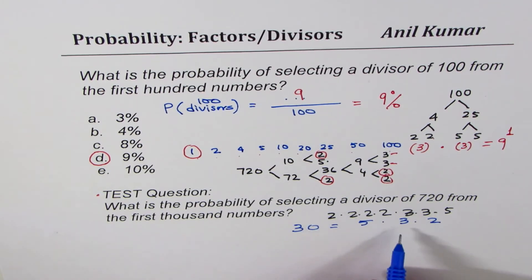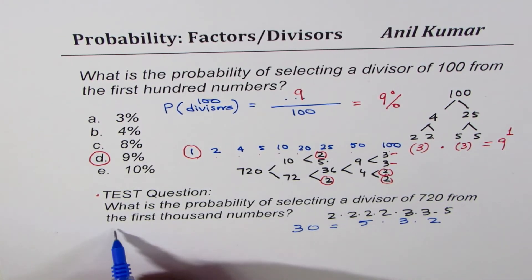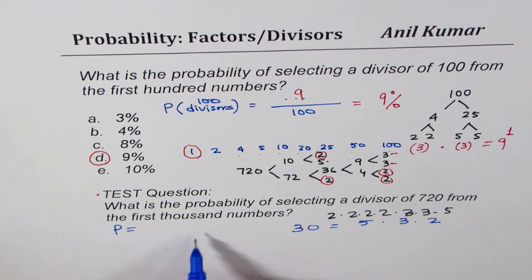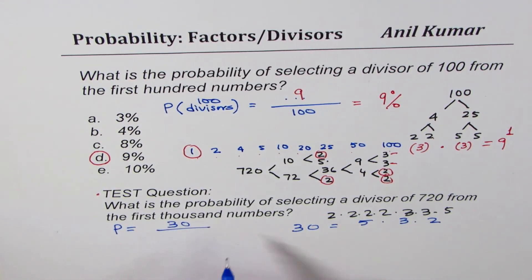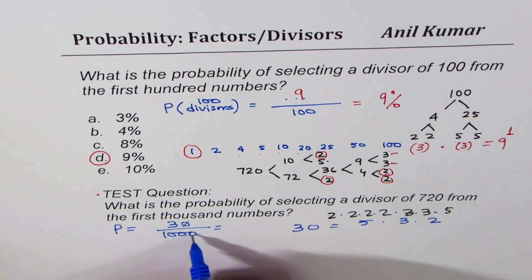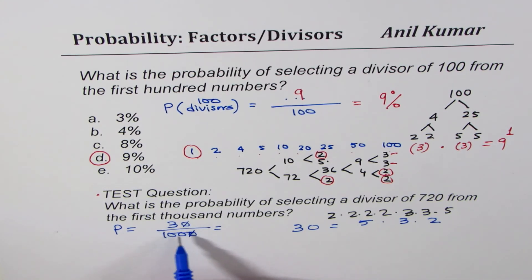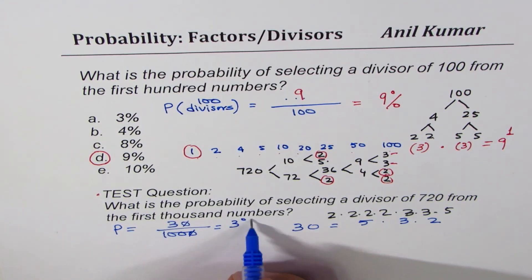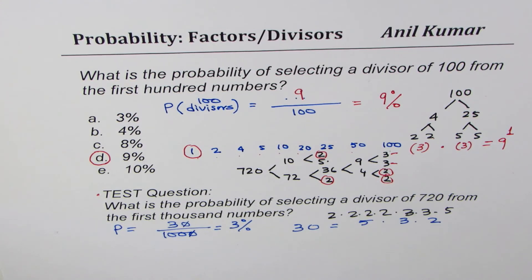So there are 30 divisors for 720, and therefore the probability is 30 out of 1000. Simplifying, the answer is 3%. That is how you find probability by counting the number of factors or divisors for any number. I hope that helps. Thank you and all the best.